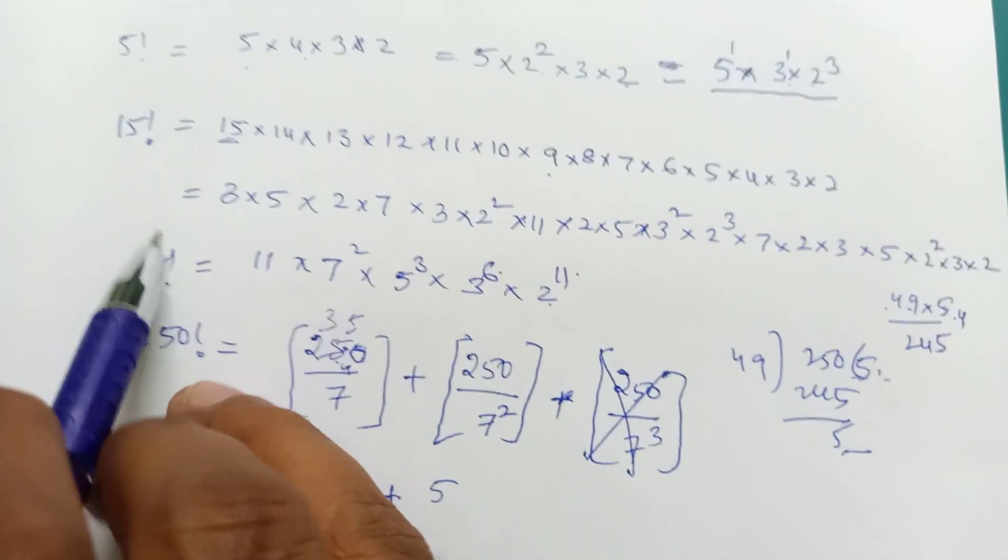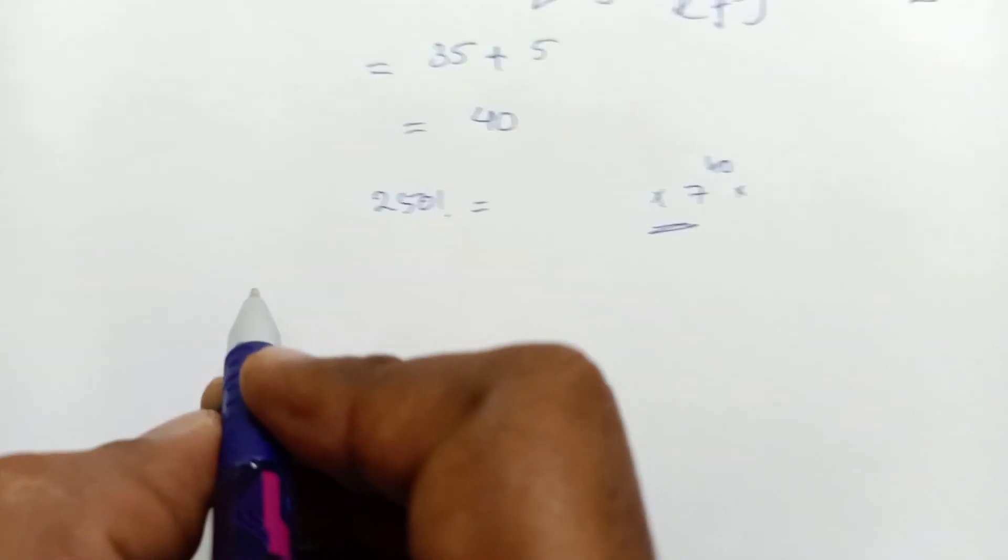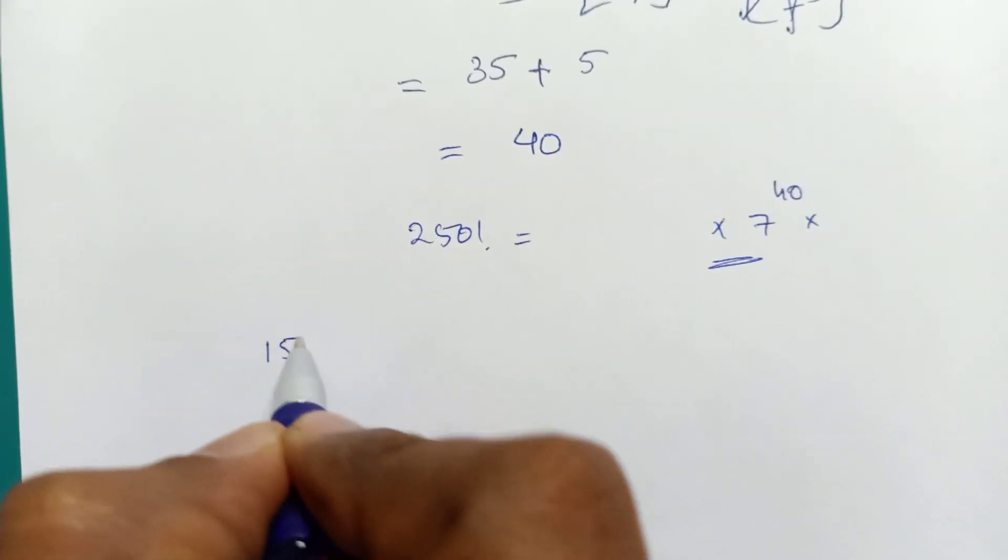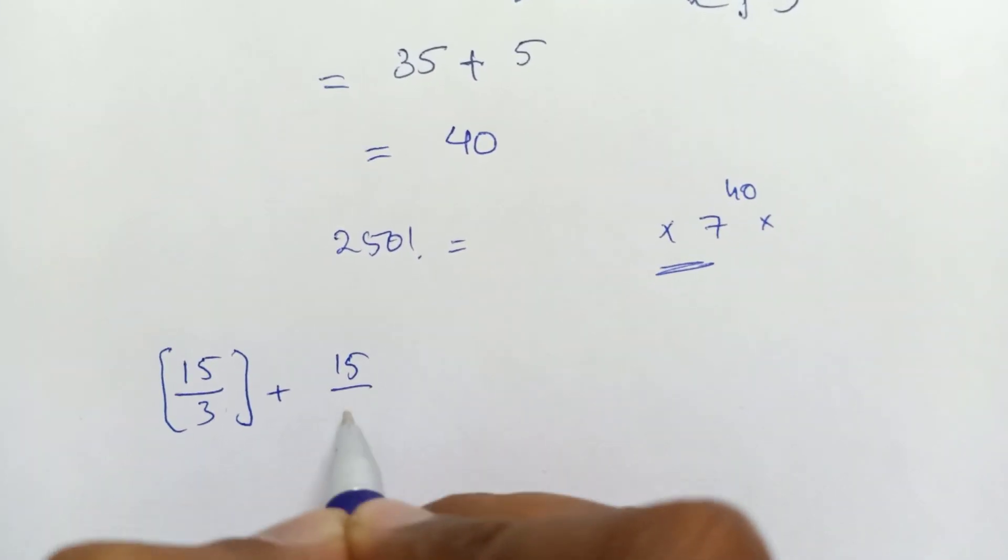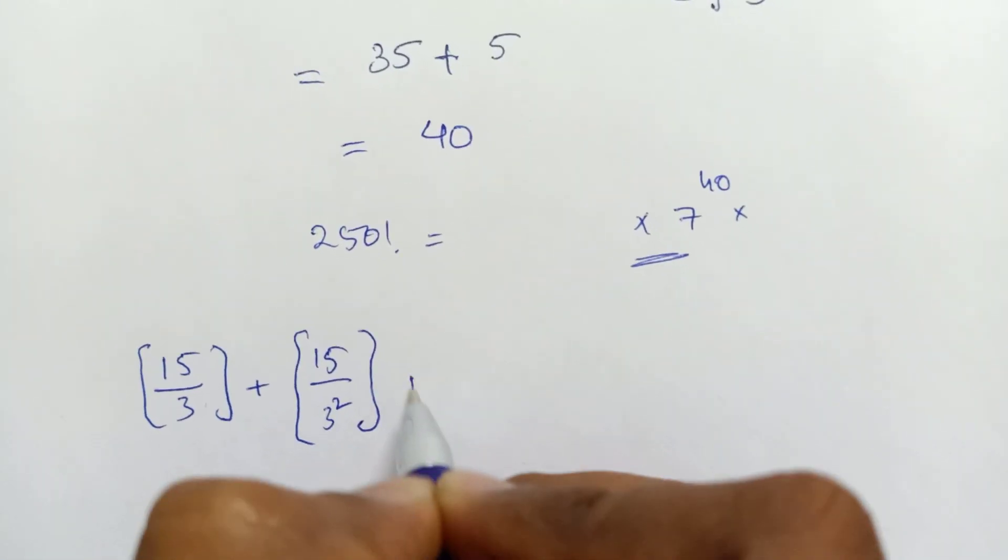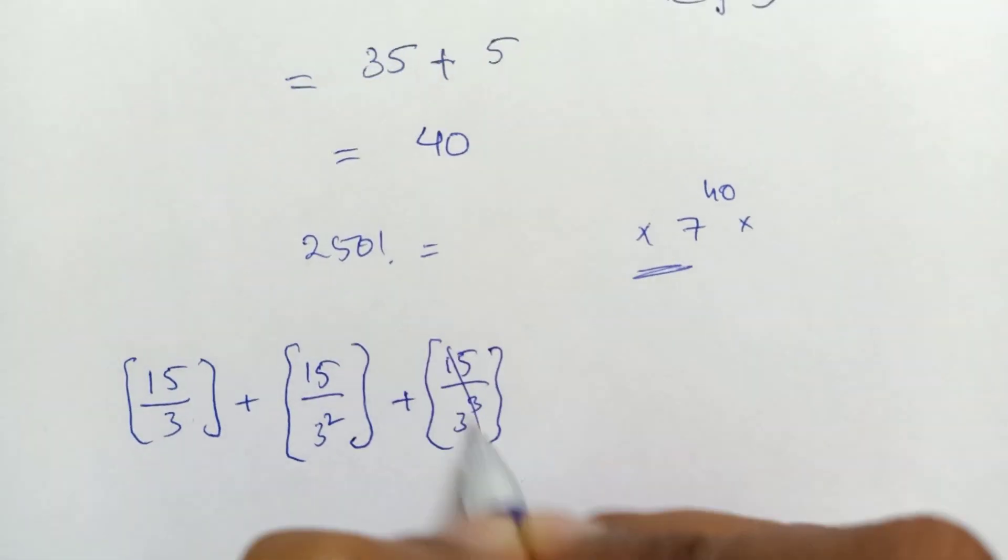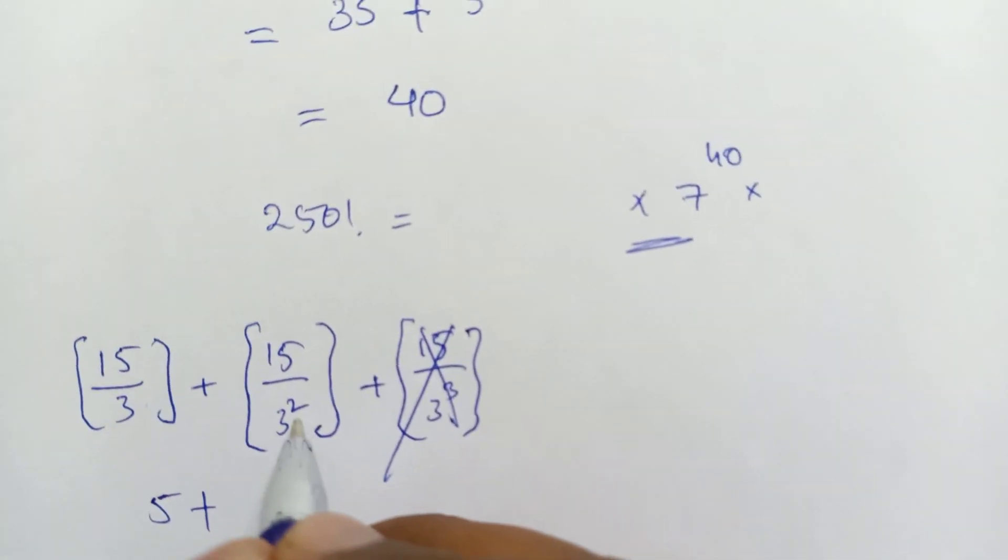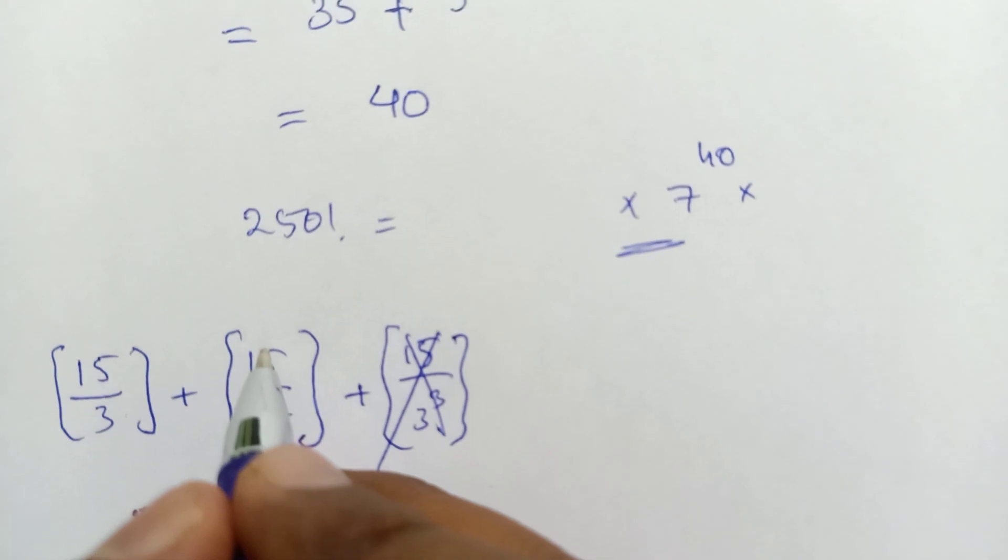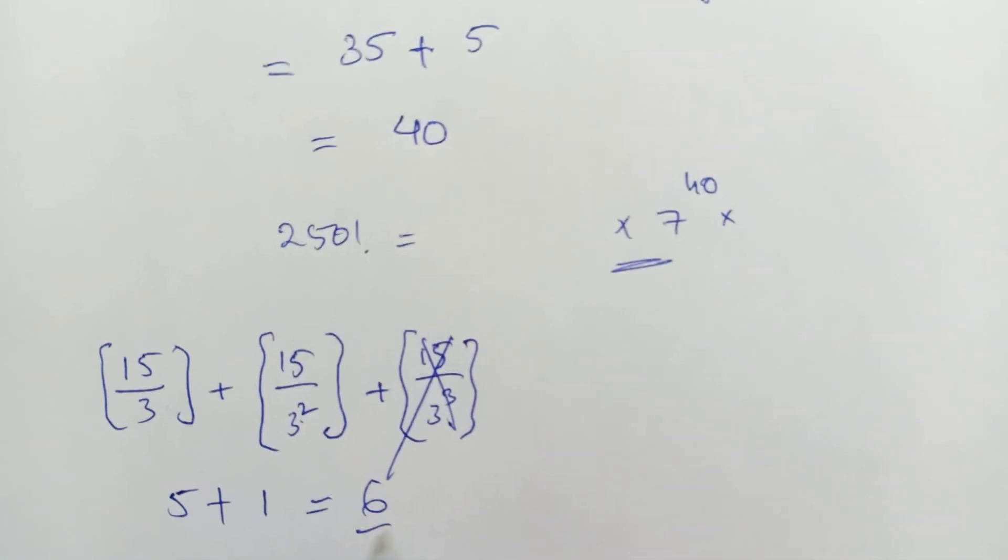Now, for 15 factorial we found 3 to the power of 6. We can verify: 15 divided by 3 equals 5, plus 15 divided by 3 squared (which is 9) equals 1. So 5 plus 1 equals 6, confirming 3 to the power of 6.